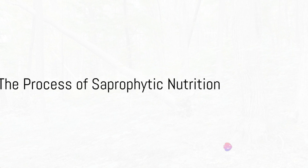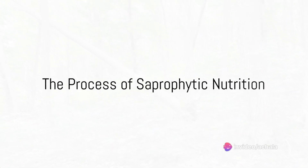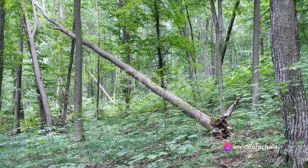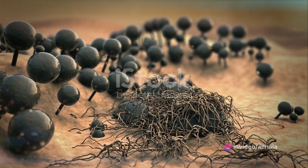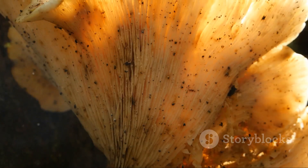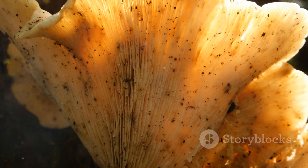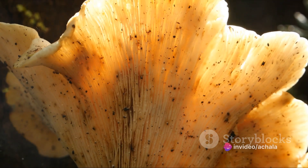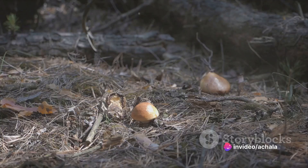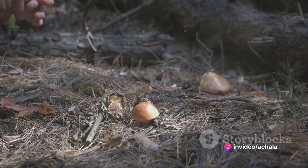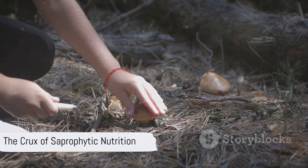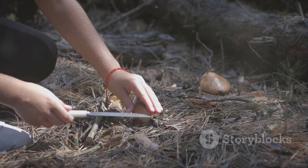Now let's dive into the process of saprophytic nutrition. Imagine a fallen tree in the middle of a forest — over time it starts to decompose. This is where our saprophytic friends come into play. They excrete enzymes onto the decaying matter, which break down complex organic materials into simpler substances. These simpler substances, rich in nutrients, are then absorbed by the saprophytes. This process of external digestion and absorption is the crux of saprophytic nutrition.